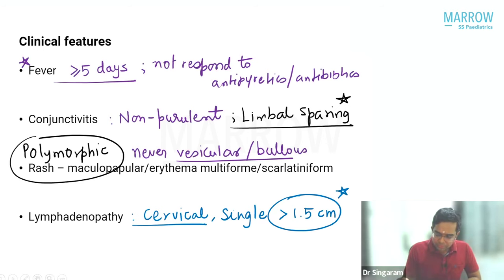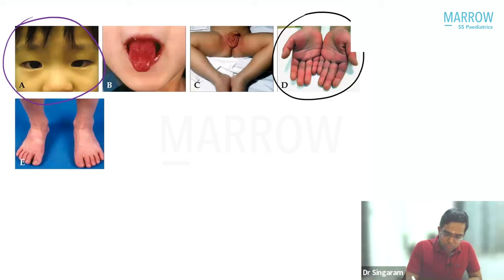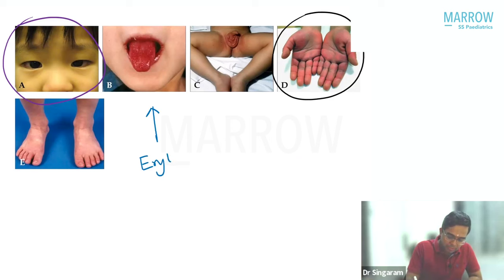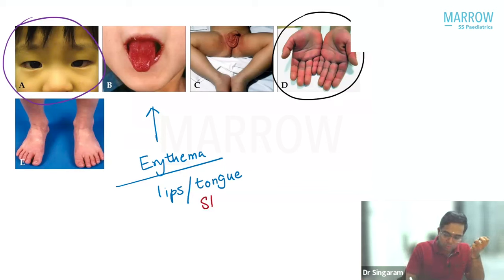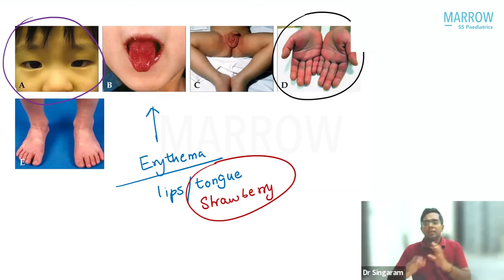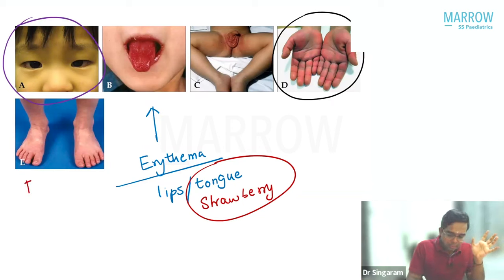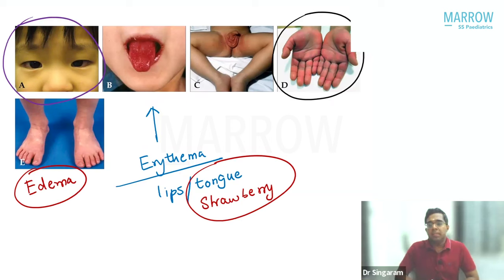Oral mucosal changes include erythema — redness of the lips and the tongue. The characteristic tongue finding is called strawberry tongue. Edema of the limbs can also be noted in Kawasaki disease.